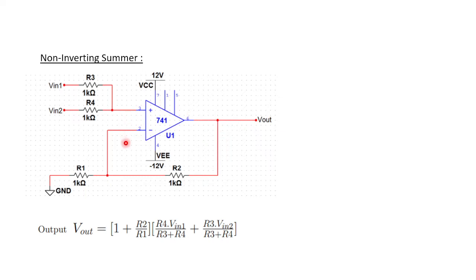This is a schematic circuit diagram using an op amp. The inputs are connected to the non-inverting terminal — as mentioned, it's a non-inverting summer, so inputs go to the non-inverting terminals with resistors in series. The other part of the circuit is the gain, set by resistors R2 and R1. In a non-inverting amplifier the gain is 1 plus R2 over R1.